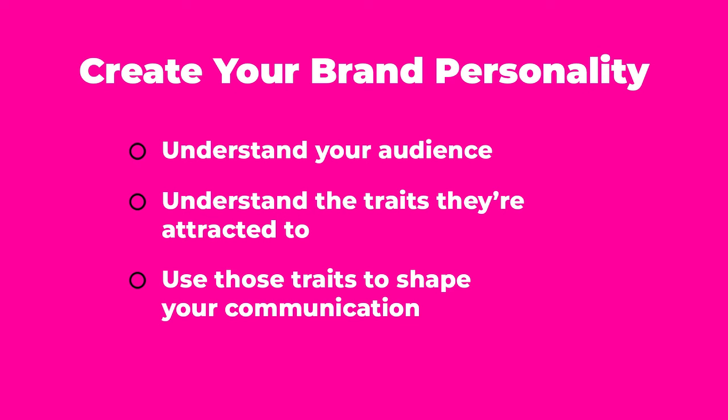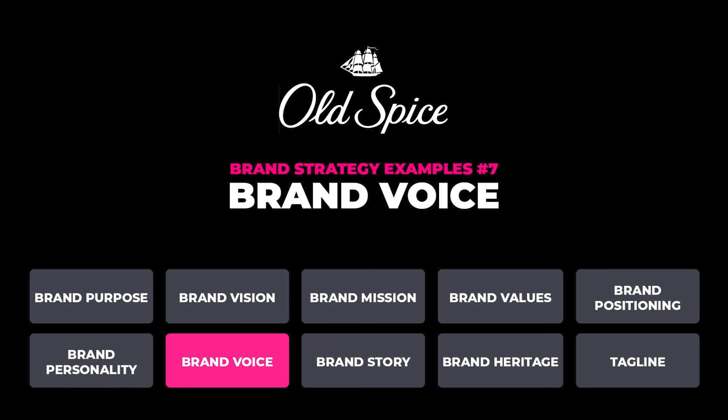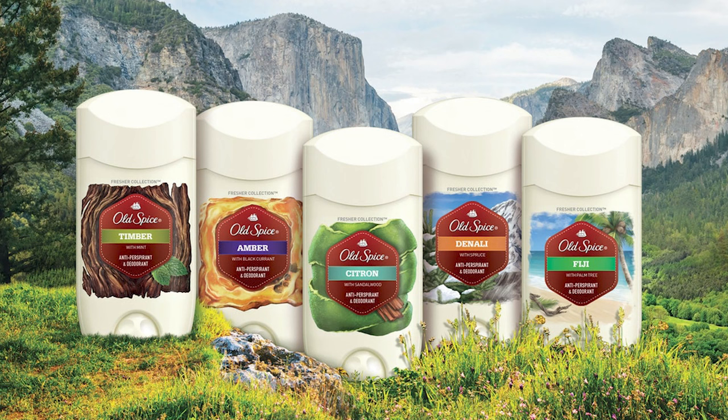Brand strategy example number seven is Old Spice with their brand voice and tone. Brand voice and tone is really an extension of the brand personality. The goal of brand voice and tone is to set the mood and provide a guide for how the brand will sound to the audience in the marketplace. While your brand personality provides the broader strokes of how your brand will show up, your brand voice provides the subtle detail of your brand's tonality. Your personality and tone work hand in hand to deliver your message in a specific manner to attract your audience.